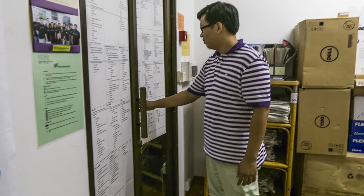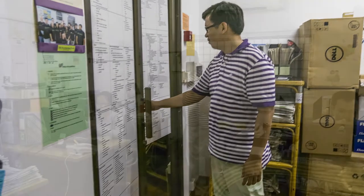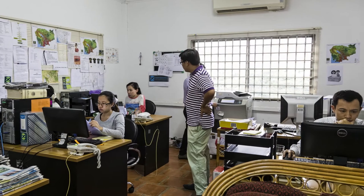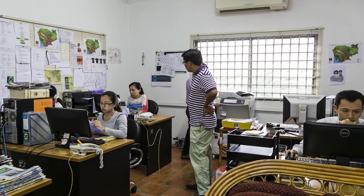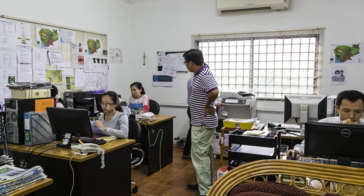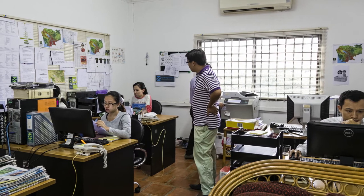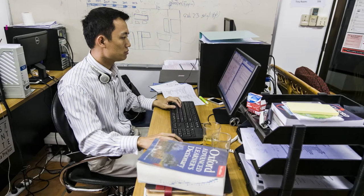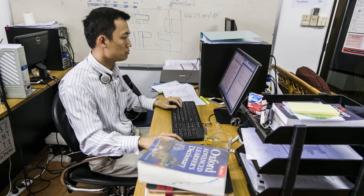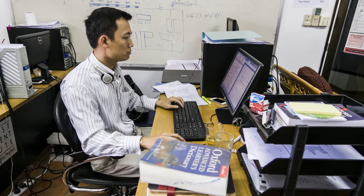Firstly, the editor team finds the information. Secondly, the mapping team checks and cleans the data and uses them to prepare graphics and maps. And finally, after a last check, the IT team publishes them on ODC's website.